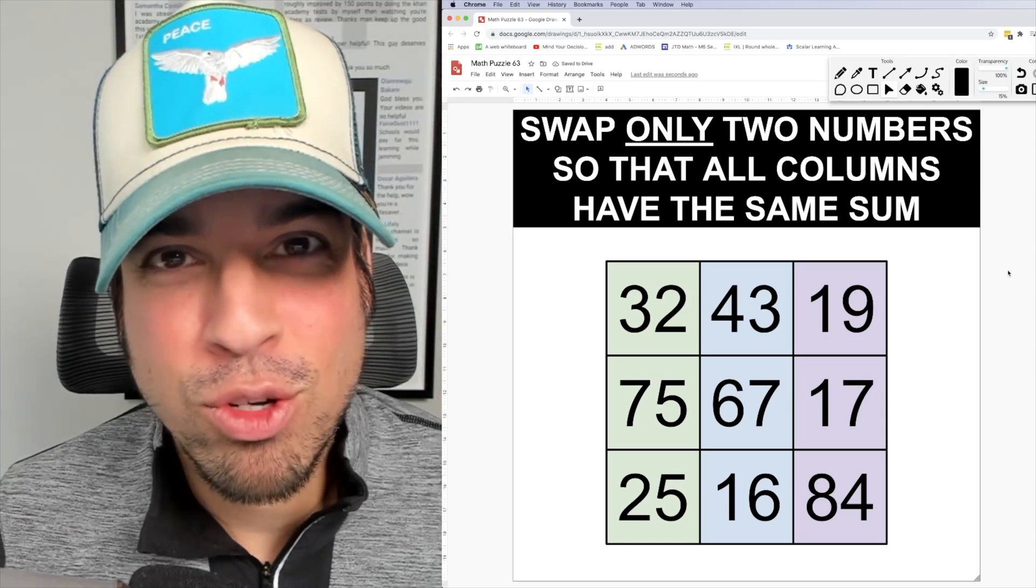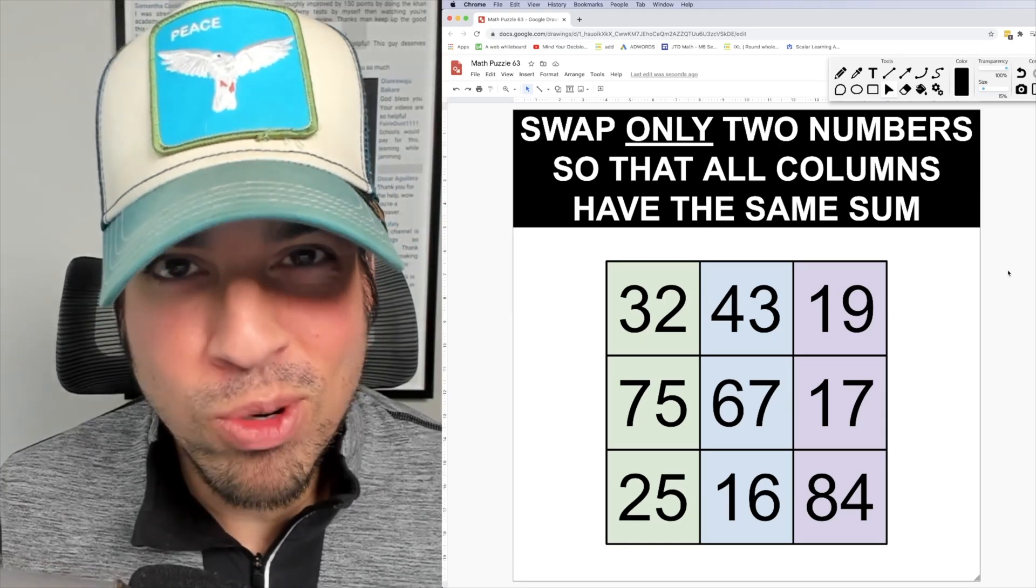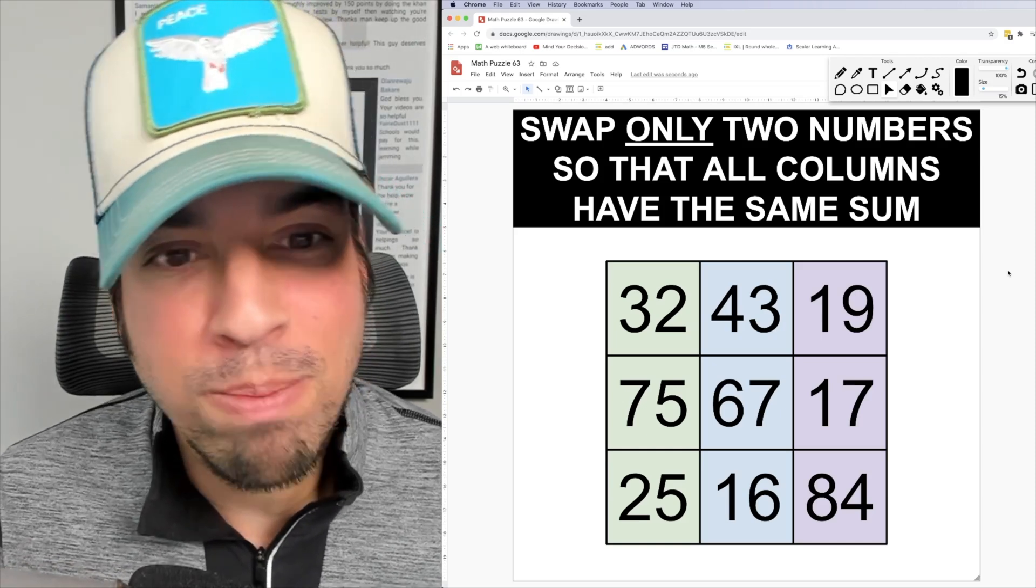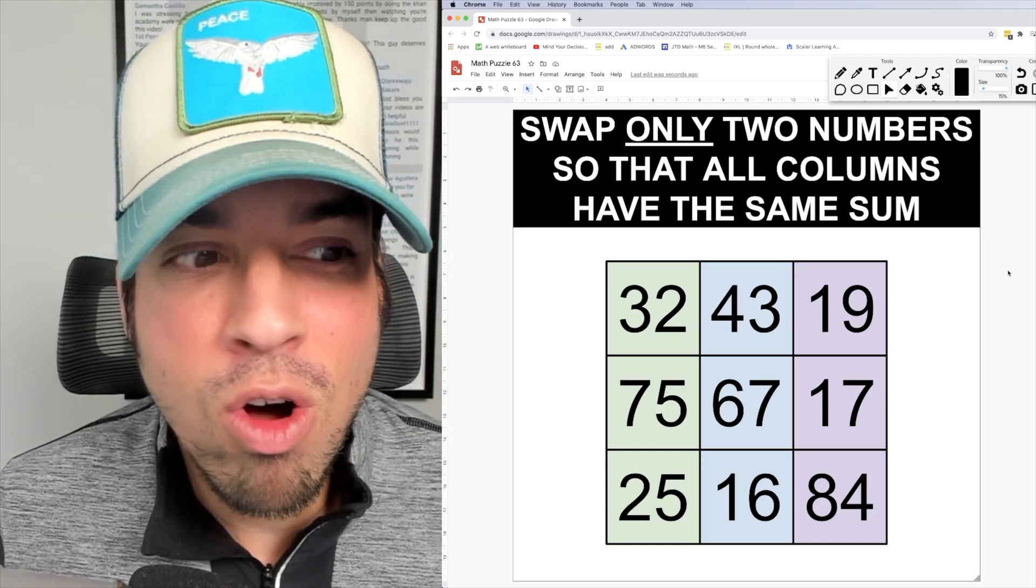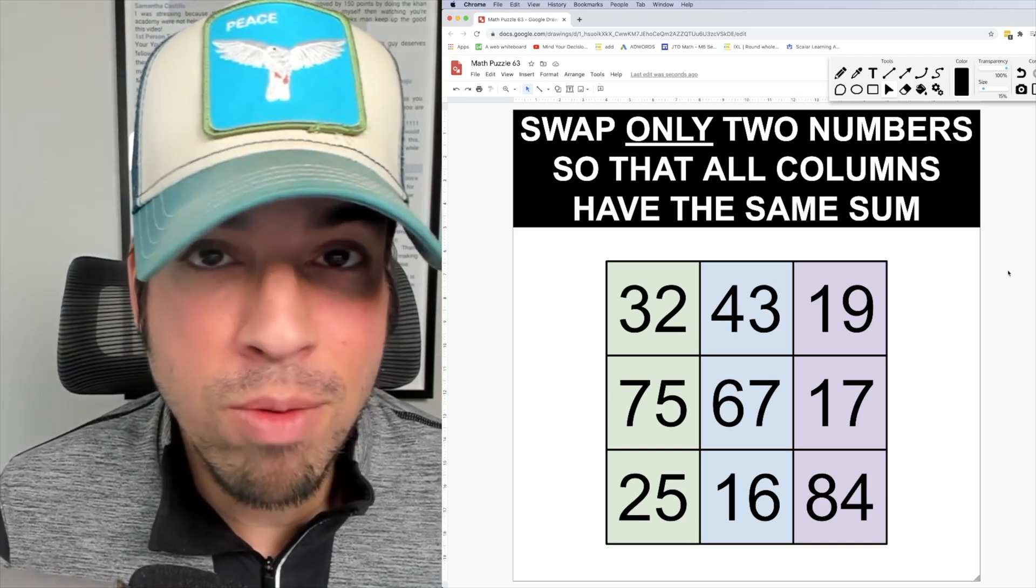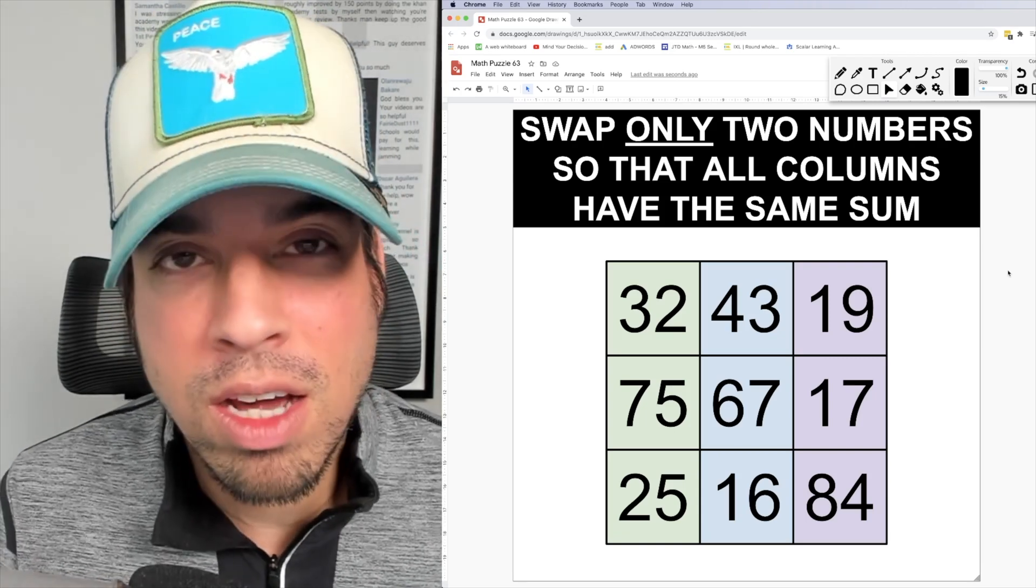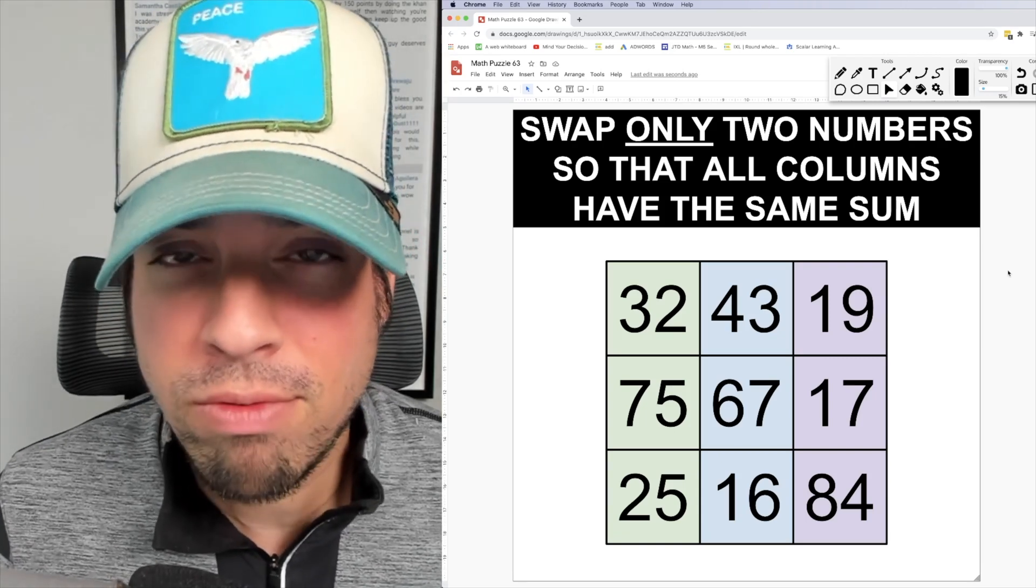What's up everybody and welcome back to another math puzzle. In this one the challenge is to swap only two numbers so that all columns have the same sum, and what you notice is I've color-coded the columns. The columns are straight up and down vertical.